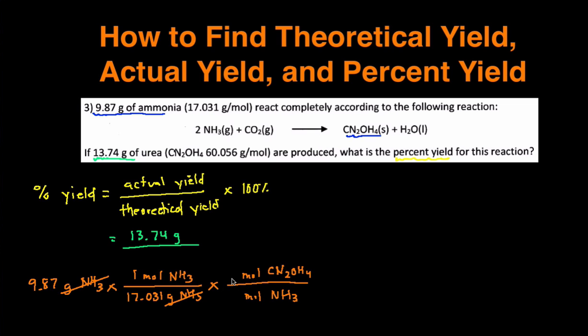And then the mole-to-mole ratio I get from the coefficient. There's a 1 in front of the urea, so I put a 1 here. And then there's a 2 in front of the ammonia, so I'm going to put a 2 there. And the moles of ammonia cancels out. Now I'm left with moles of urea, and then the next step is to multiply by the molar mass of urea, which is 60.056 grams of urea over 1 mole of urea, and then that way the moles cancel each other out.